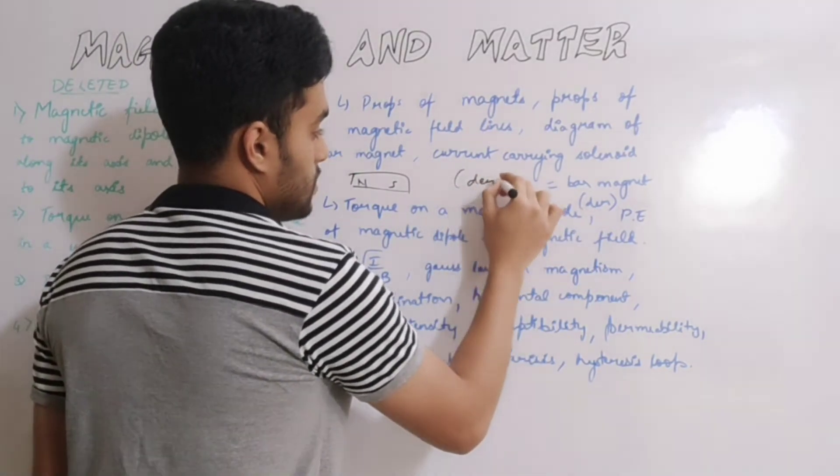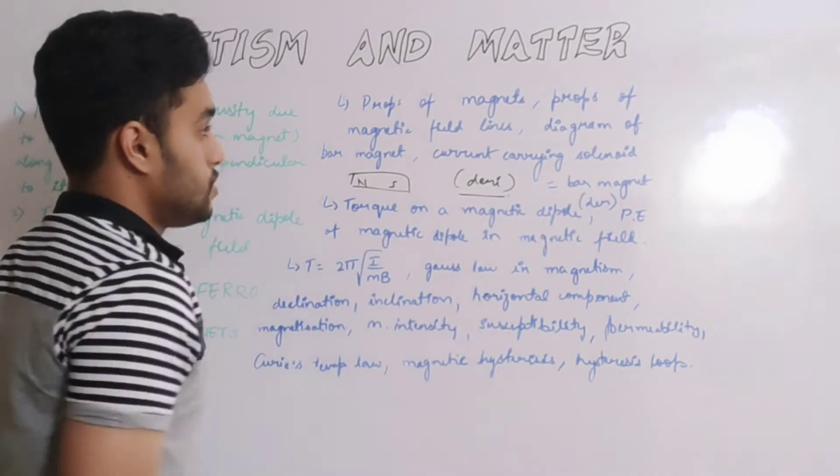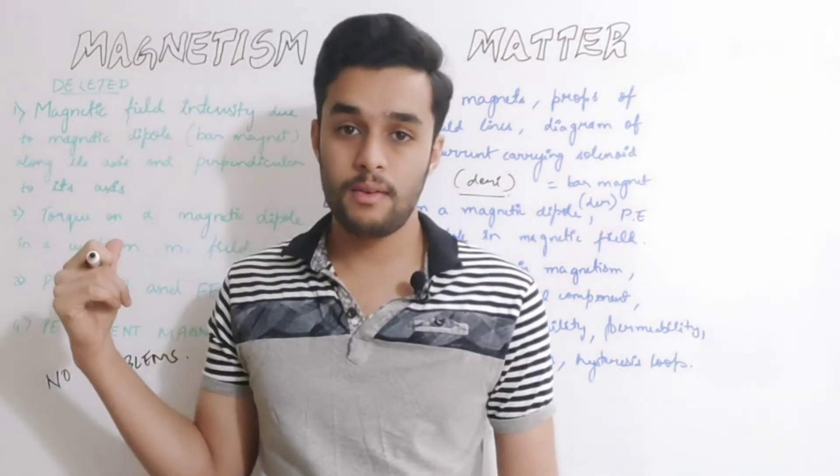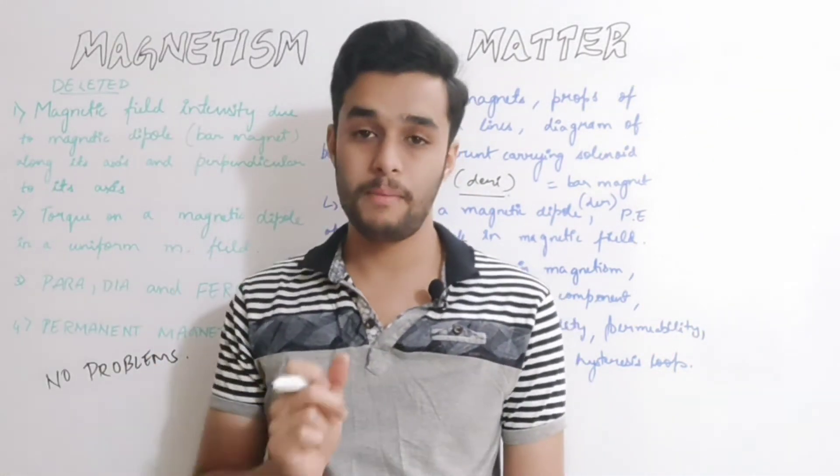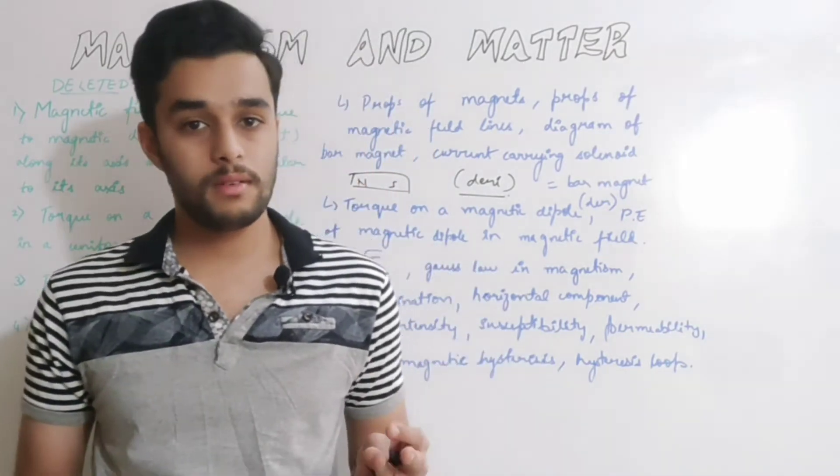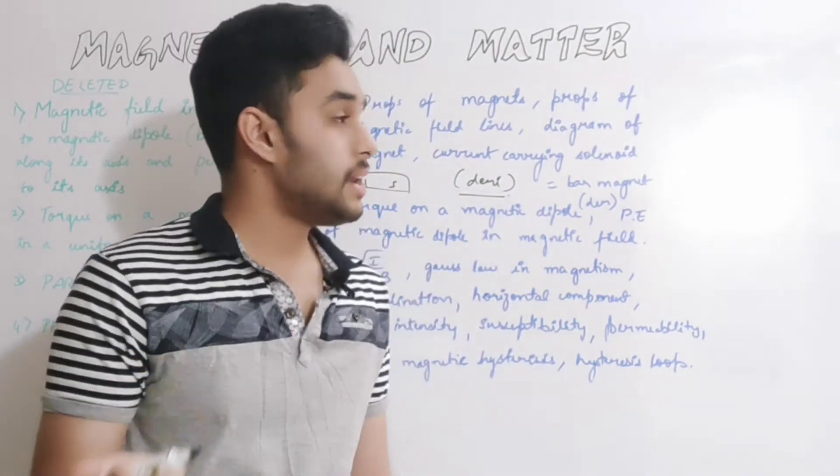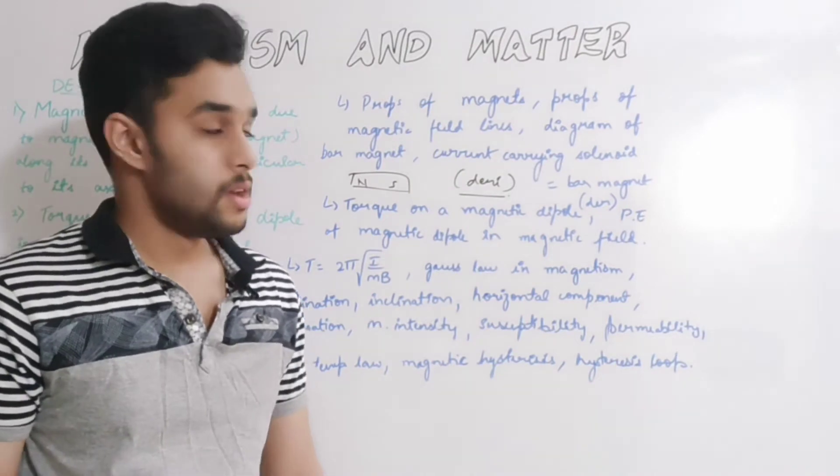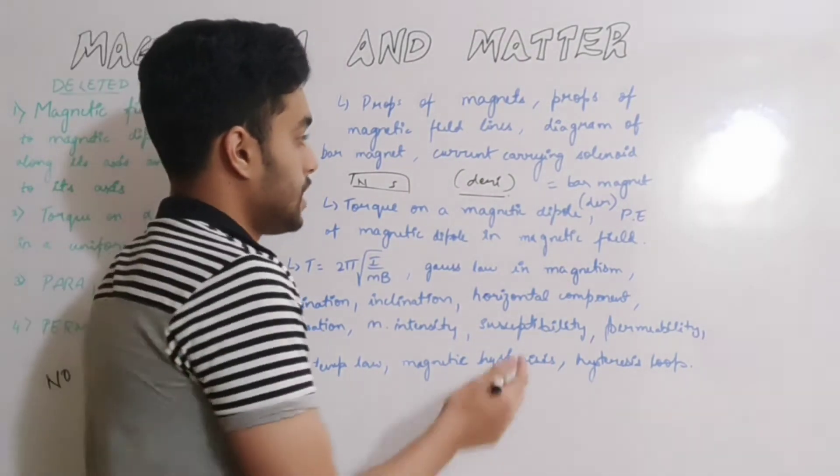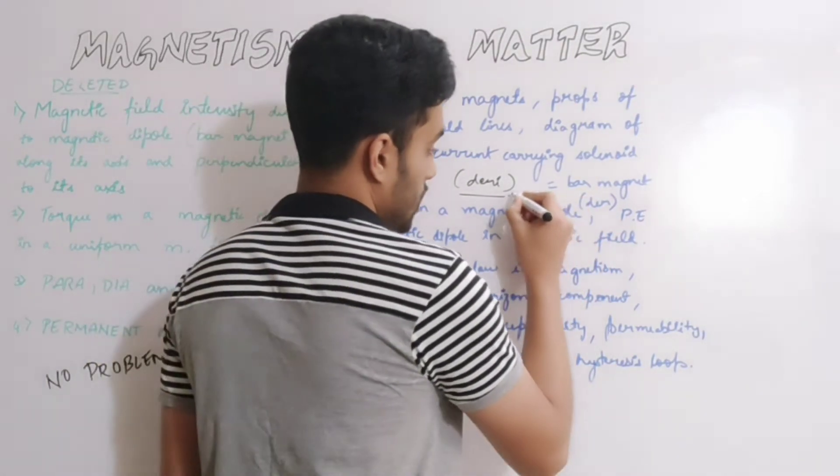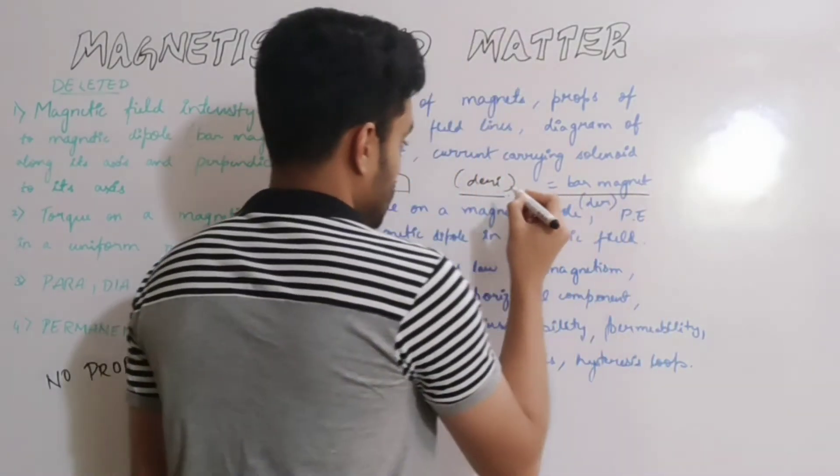Usually magnetism and matter chapter has one mark questions, two marks questions, and five marks derivation questions. So when derivation comes, current carrying solenoid equals bar magnet is the only derivation you need to prepare.